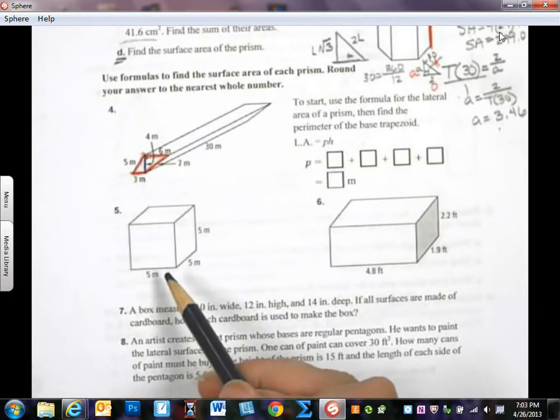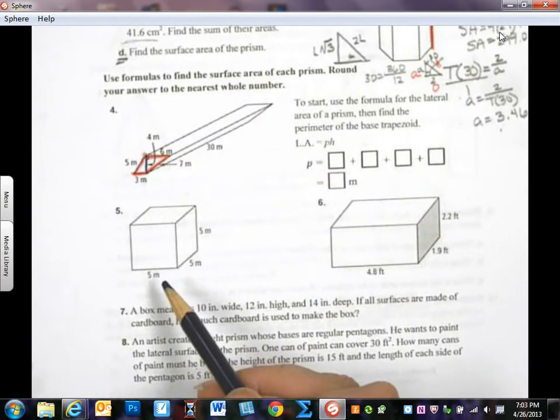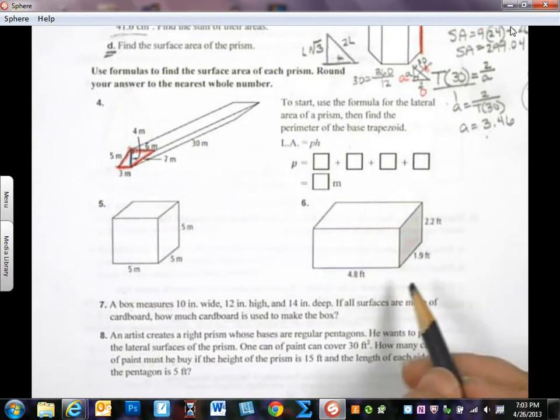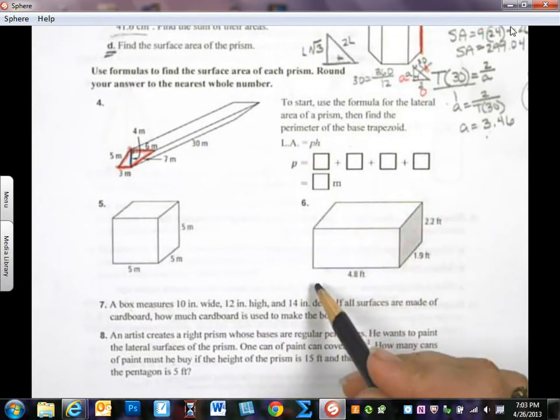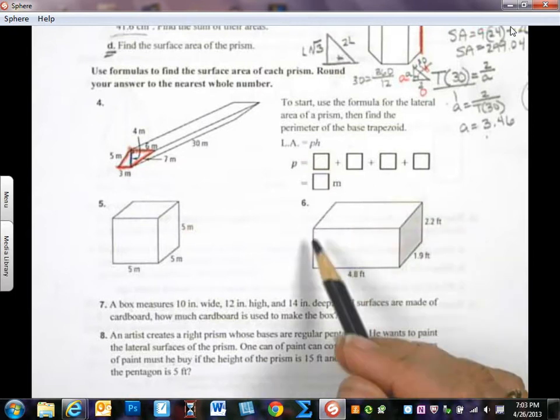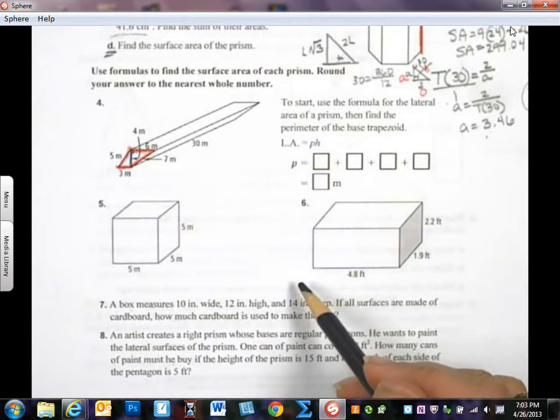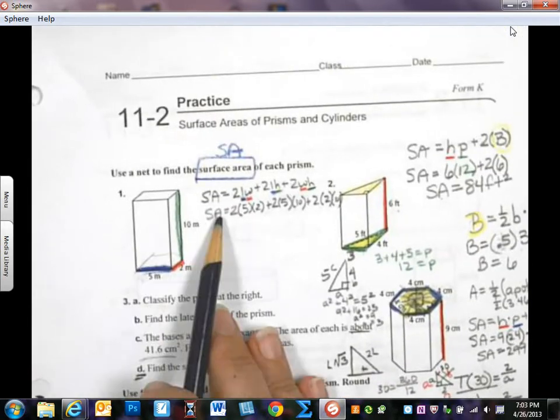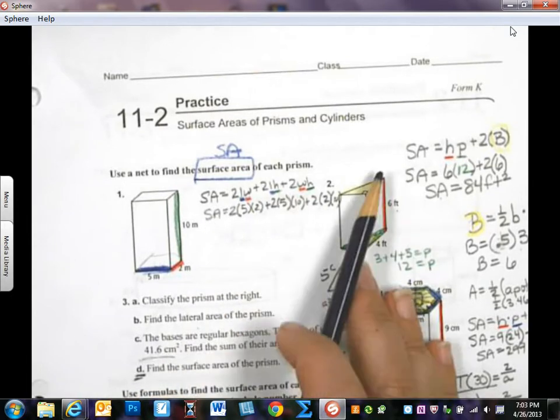Now on this, this is a cube, so it doesn't matter which side is the base, because they're all the same. But on this one, it's giving you another parallelogram prism, and you can use either of the formulas that we talked about today. You can choose to use this one, or you could choose to use this one.